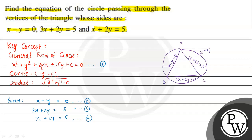To find the vertices, we solve pairs of side equations. Solving equations 2 and 4 gives us vertex A coordinates. Solving equations 2 and 3 gives us vertex B coordinates. Solving equations 3 and 4 gives us vertex C coordinates. Let's find these coordinates one by one.